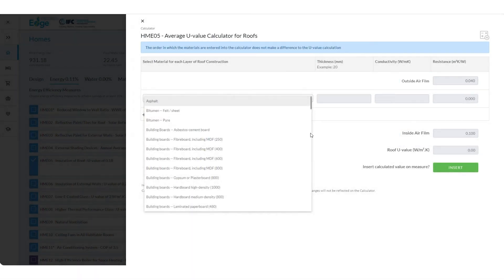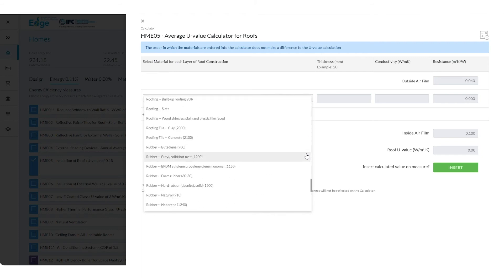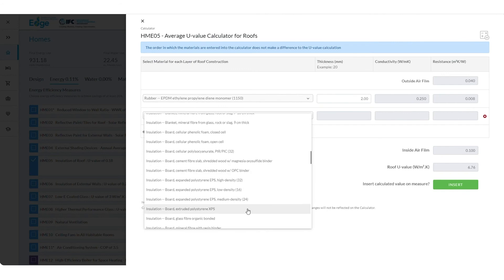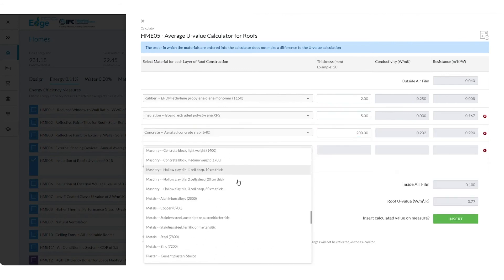Next, select the topmost material of your roof assembly from the drop-down menu. Enter its thickness. Then add the next material. Continue until all materials are added.